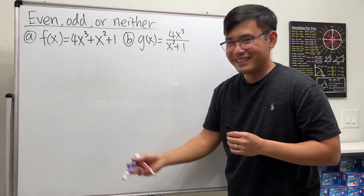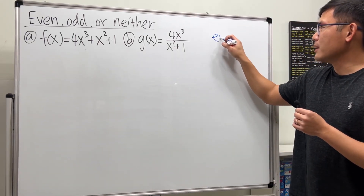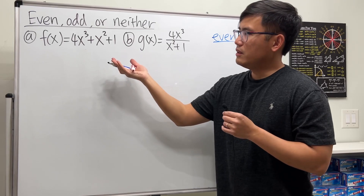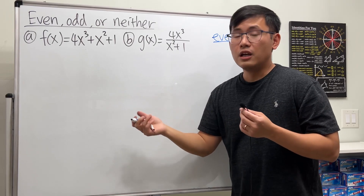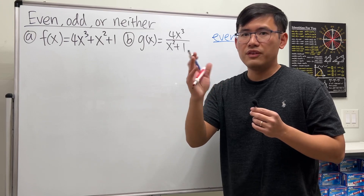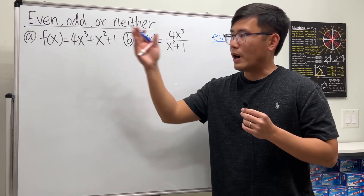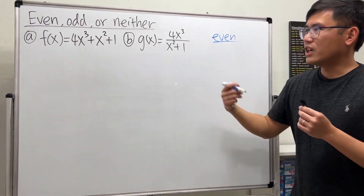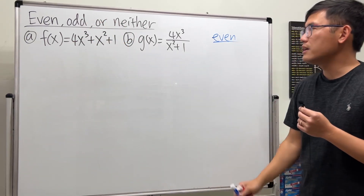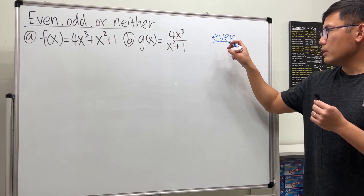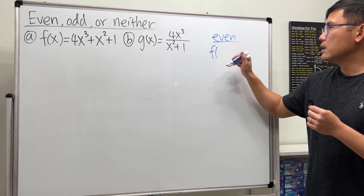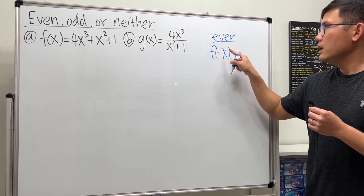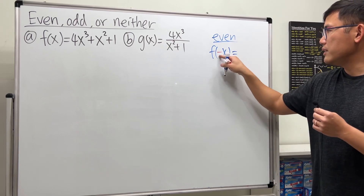How do we do it? We have to remember the following — this is how we check when we are given the function in terms of equations. If you are given the graph, it's easier — you can just look to see if it's symmetrical about the y-axis or the origin. But to check if the function is even, we plug in negative x into the function. If the function is even, the negative doesn't matter and we just get f of x, which is symmetrical about the y-axis.